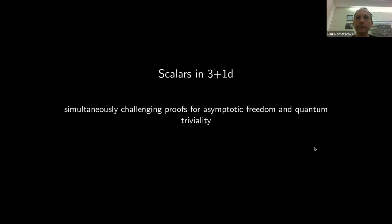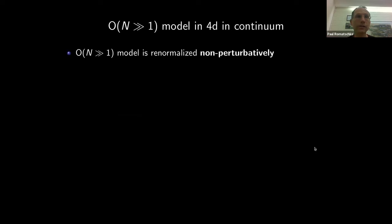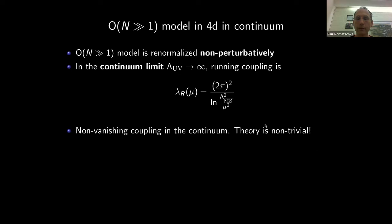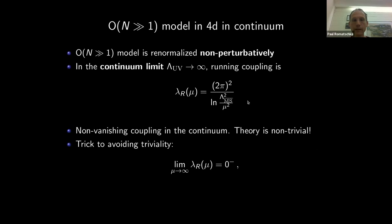When going from less than four to four dimensions, the one thing that changes is that the theory must be renormalized — non-perturbatively, since we're doing non-perturbative physics. Taking the continuum limit, we find the continuum running coupling constant at large N. The first thing to notice is that this coupling is not zero. So the theory is not quantum trivial even after taking the continuum limit — which seems to directly contradict the mathematical proof I spent the first part of this seminar explaining.